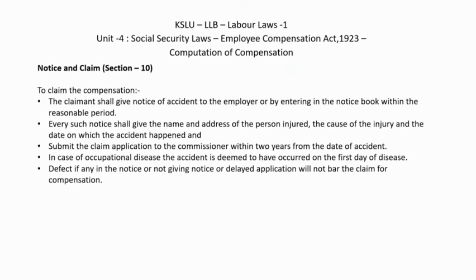Finally, the notice and claim procedure. To claim compensation, the claimant must give notice of the accident to the employer by entering it in the notice book within a reasonable period. The notice must contain the name and address of the injured person, the cause of the injury, and the date on which the injury occurred.